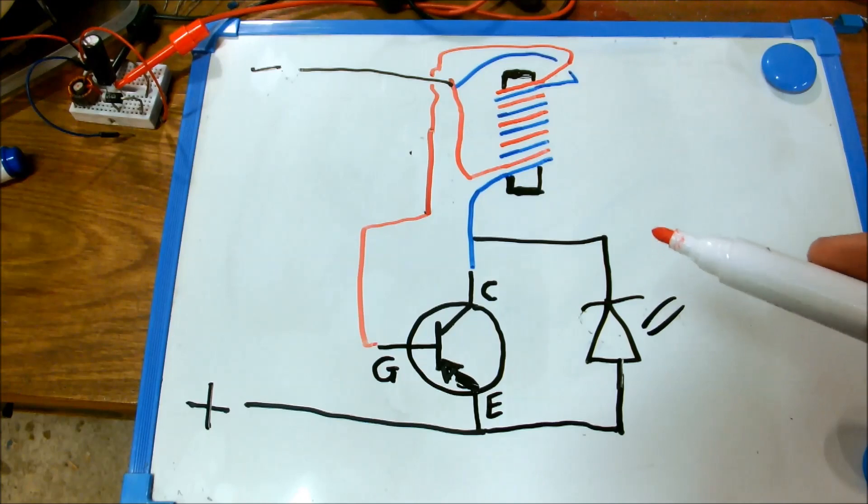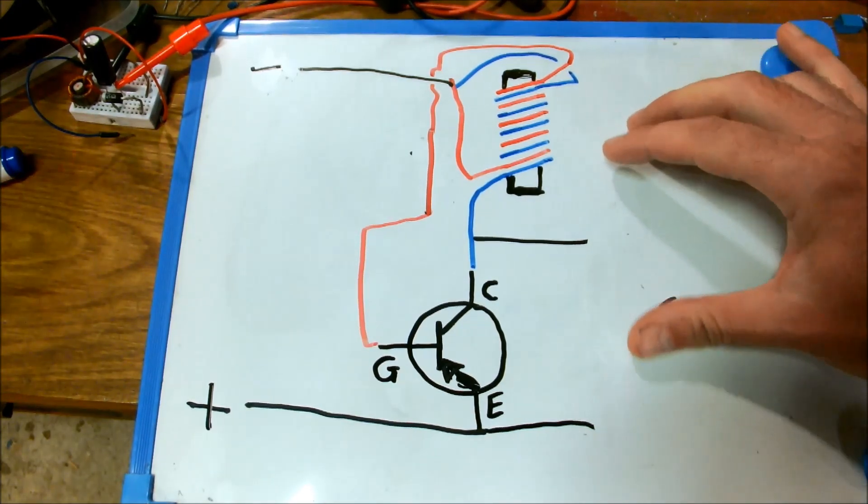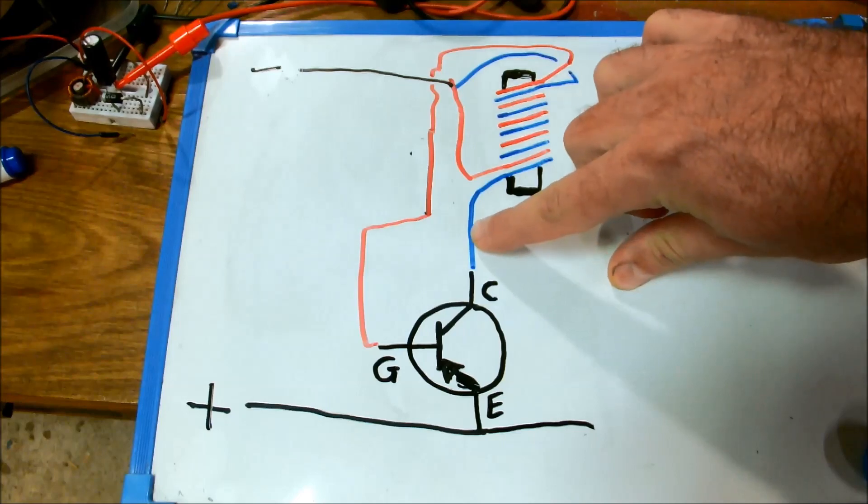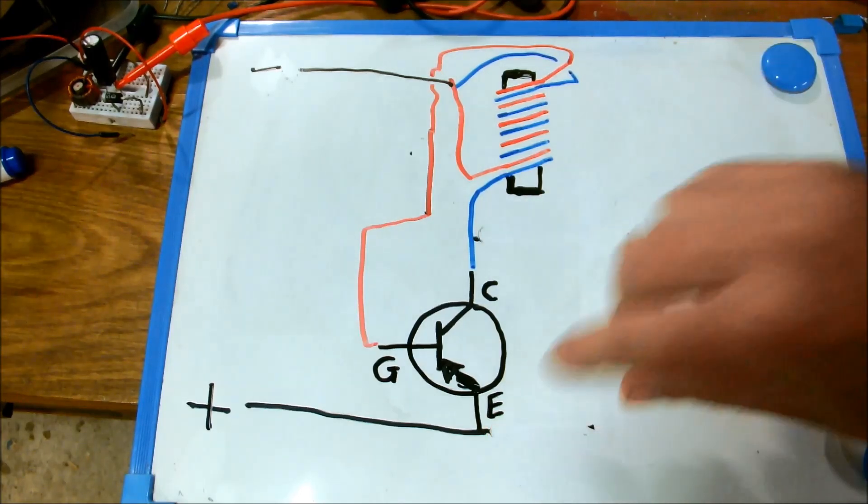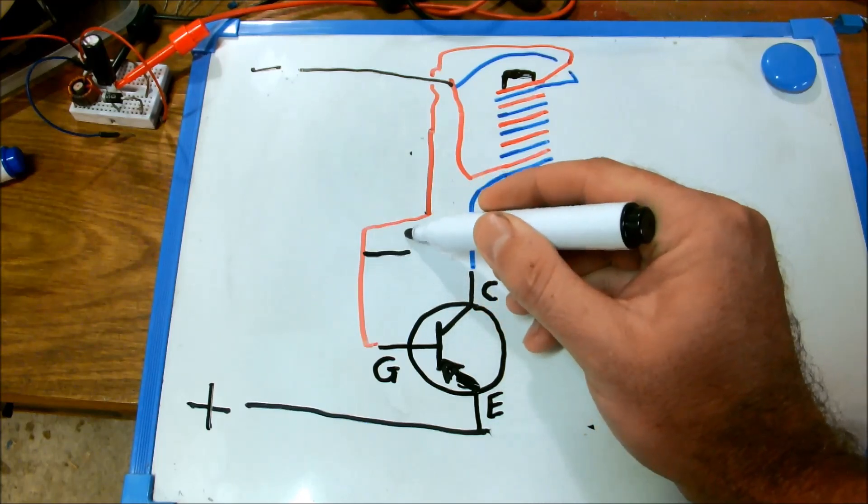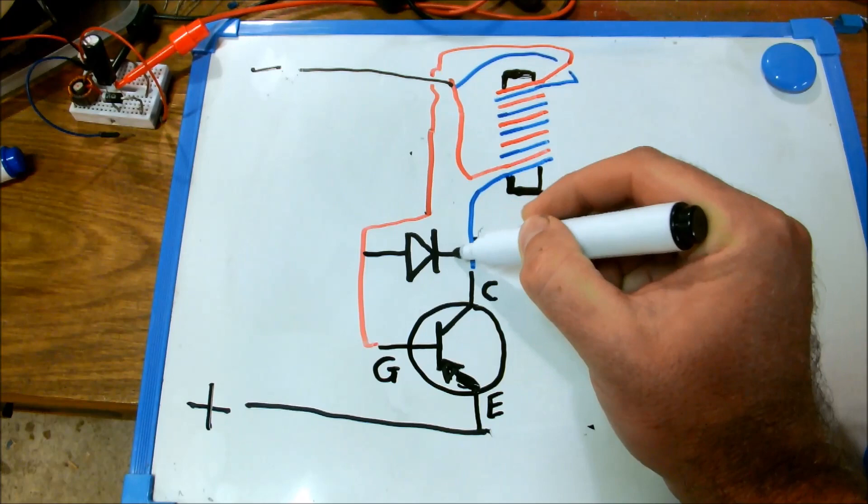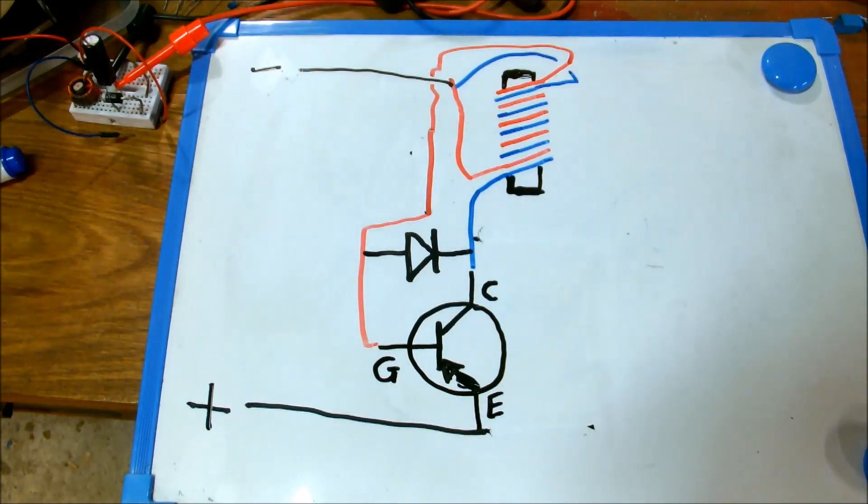And then another modification that I use in my circuit is to completely replace the position of the LED. I place my LED right there. Makes a big difference in how bright it is.